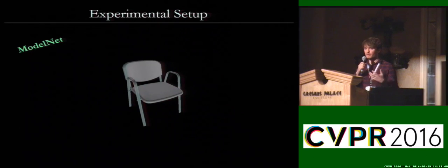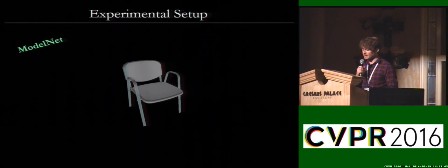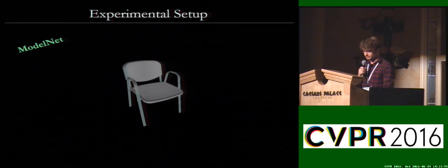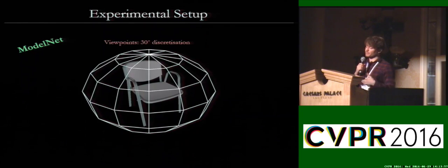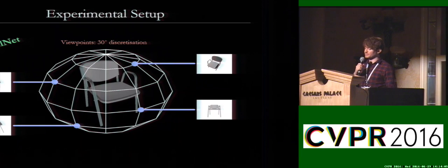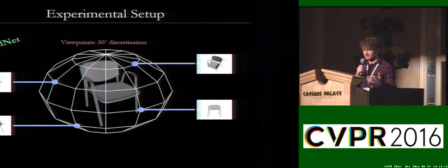Before I talk about the method, I'm going to introduce the experimental setup. We use the ModelNet dataset, which is a dataset of thousands of 3D CAD object meshes, used for both training and testing. For each object, we embed it within a spherical coordinate system discretized into 30-degree steps, and then render synthetic images from each viewpoint. These images can be depth images or intensity images with shading, and our method works for both imaging modes.